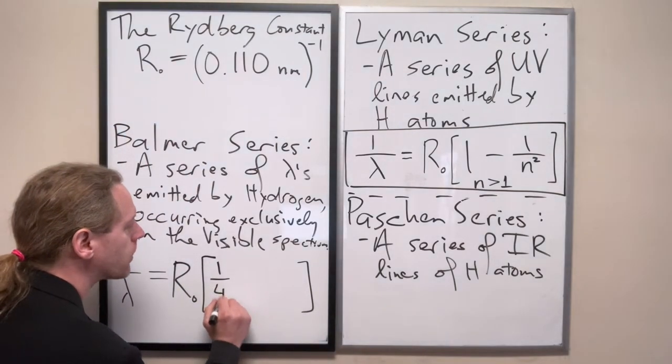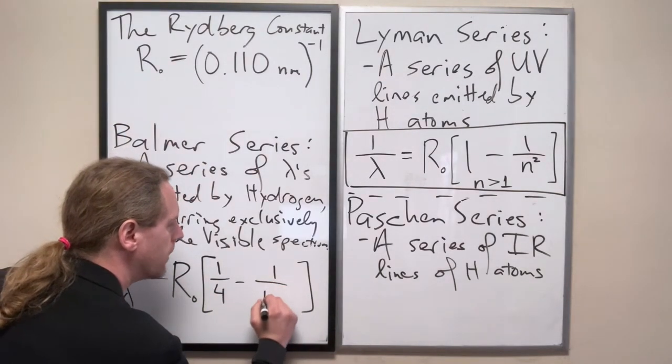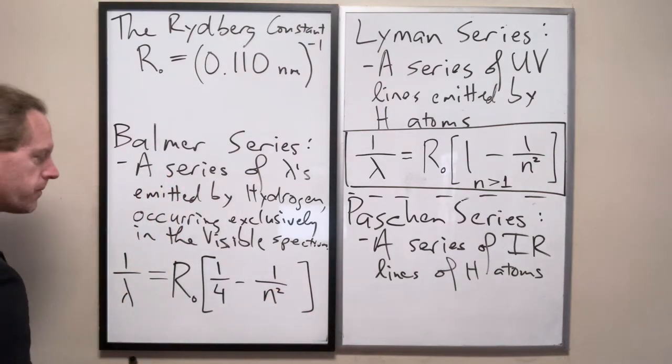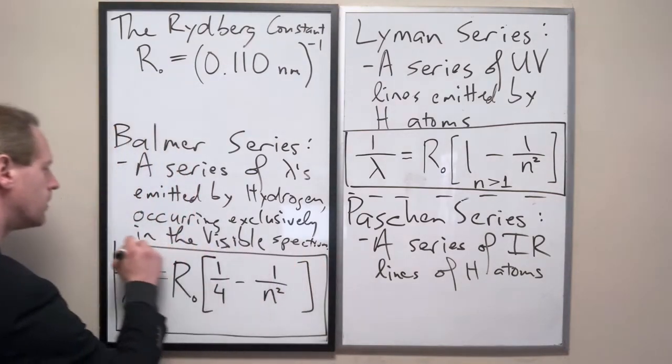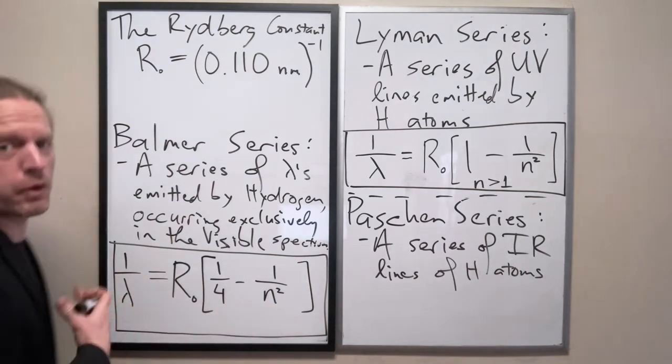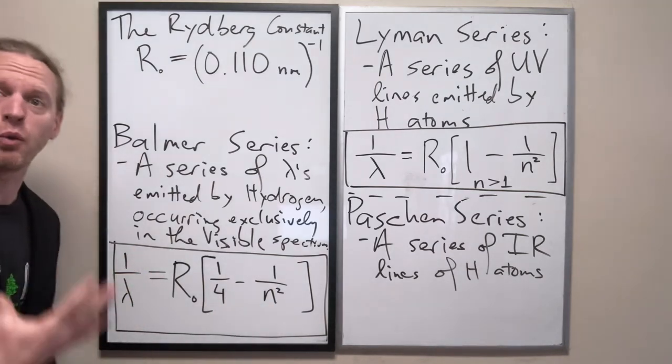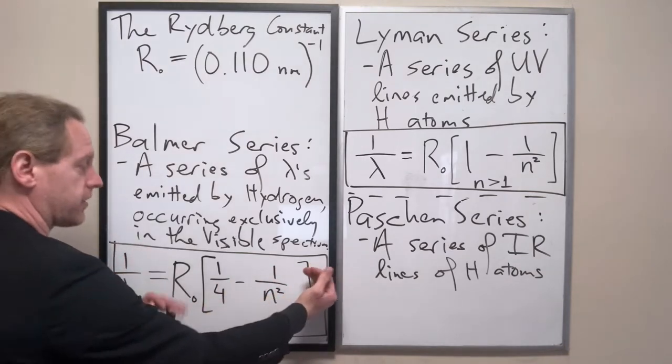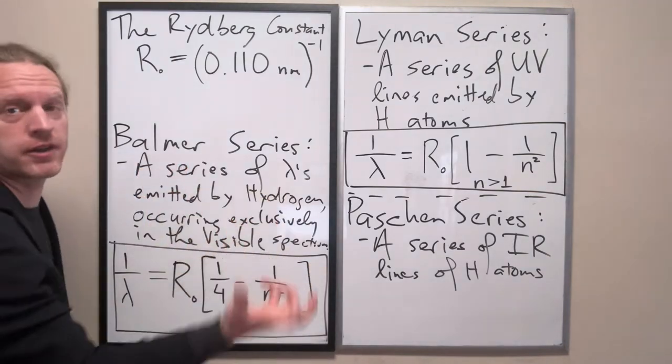The only difference here is that instead of taking 1 minus 1 over n squared, now we have to take a quarter minus 1 over n squared. And again, ultimately what we want to get out of this is a wavelength, so once you calculate the right-hand side then we'll invert it.